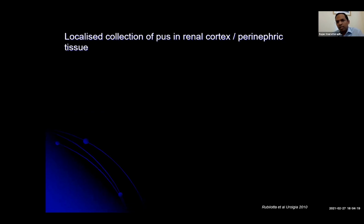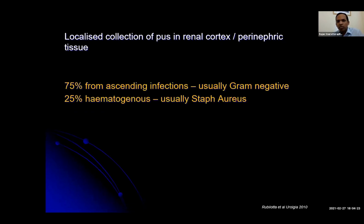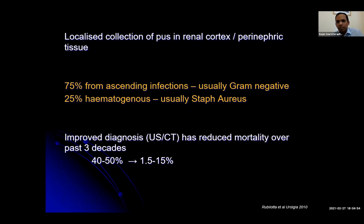Moving on to renal and perinephric abscesses. These are localised collections of pus in the renal cortex and perinephric tissues. A good systematic review looked at 107 studies over 30 years and found that about 75% of all these infections are ascending — starting in the bladder and going up to affect the kidneys — and about a quarter are haematogenous, i.e. blood-borne spread. Most ascending infections are gram-negative, whereas blood-borne ones are usually Staphylococcus aureus. Mortality has reduced over three decades, driven by advances in imaging with earlier diagnosis — from about 50% down to 1.5 to 15% depending on the paper.